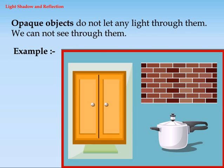Opaque objects don't let any light pass through them. We cannot see through them. Examples: wood, bricks, metals.